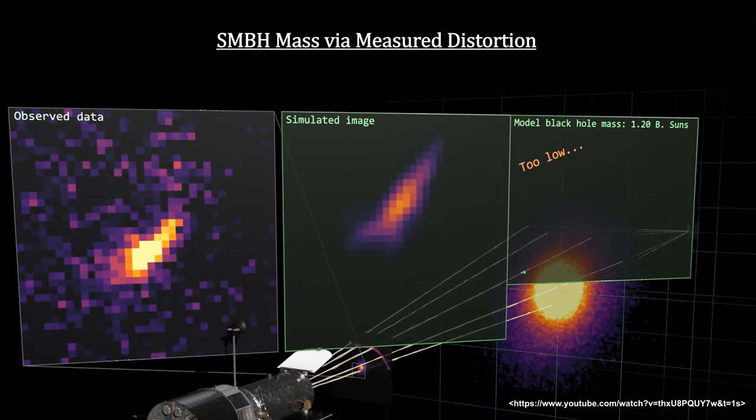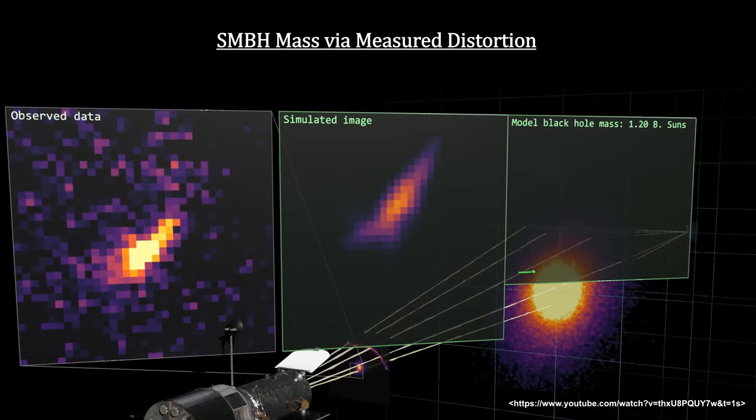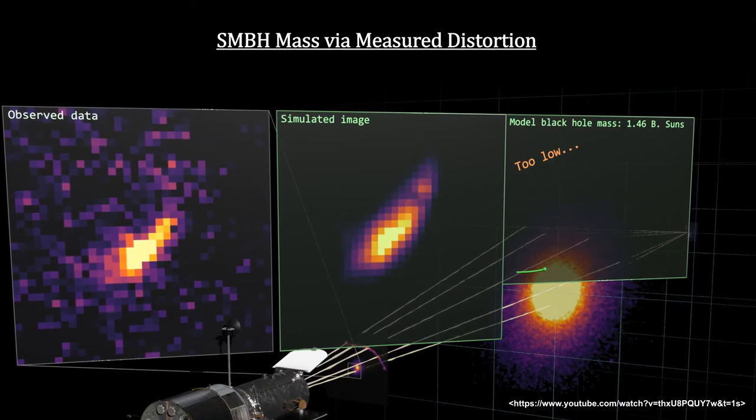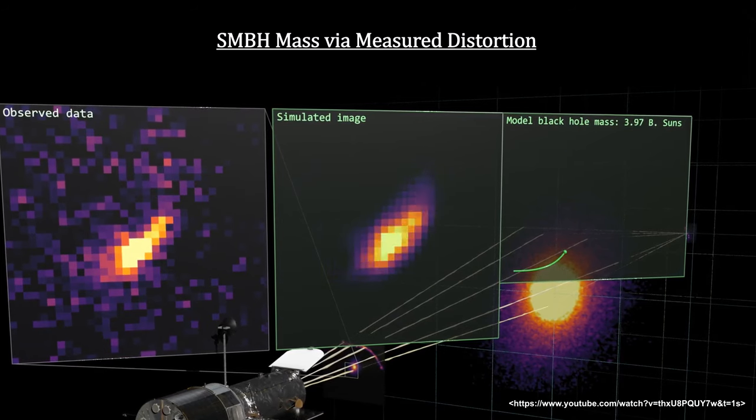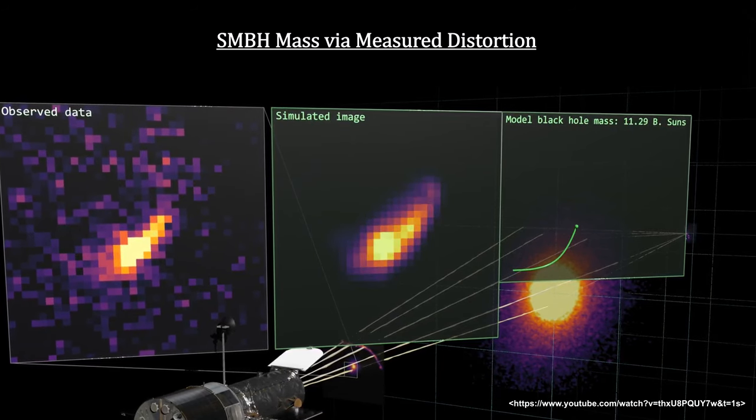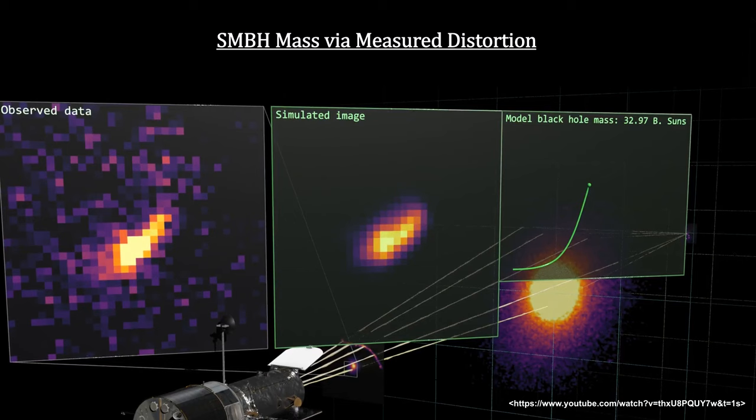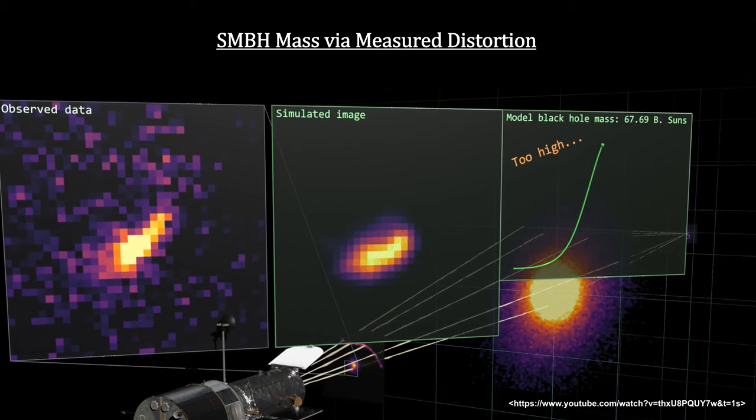To find the mass of this black hole, astronomers, with the help of large computer models, simulated an image that a black hole would create. The output image depends on the mass of the black hole. Mass is an input to the algorithm.